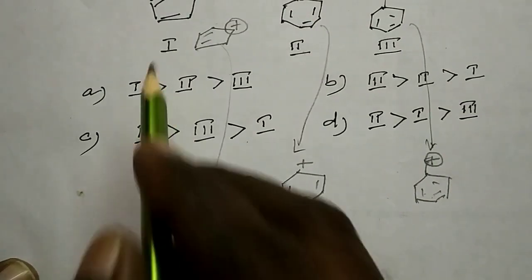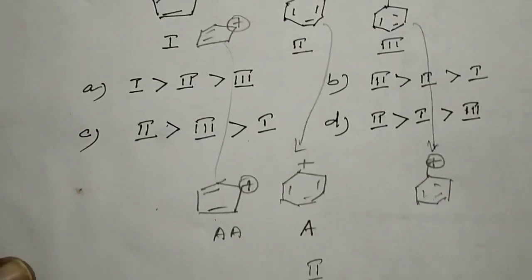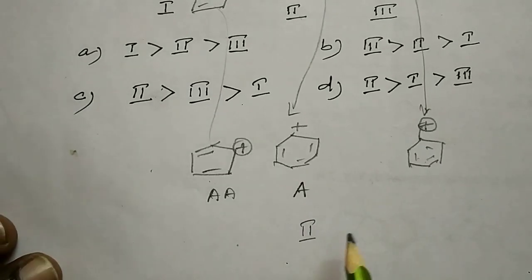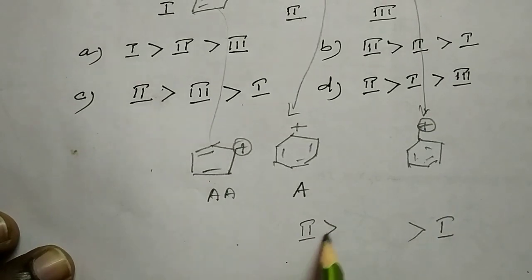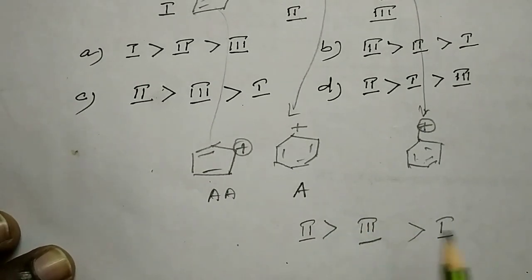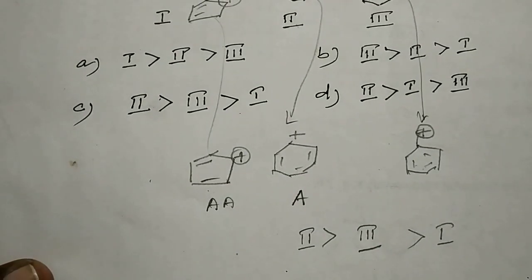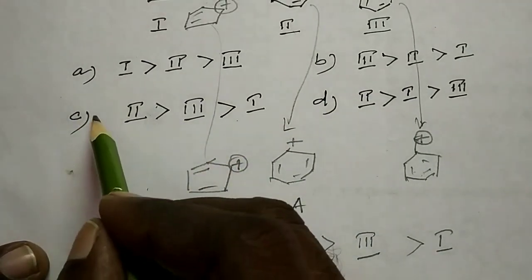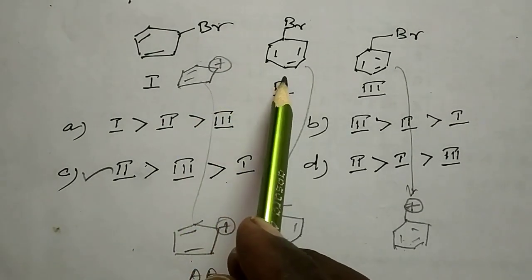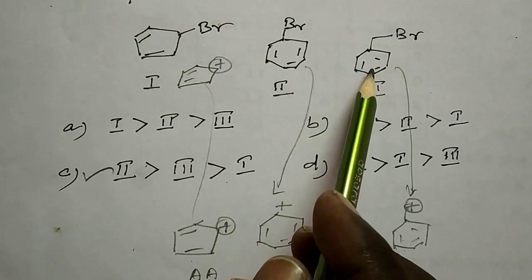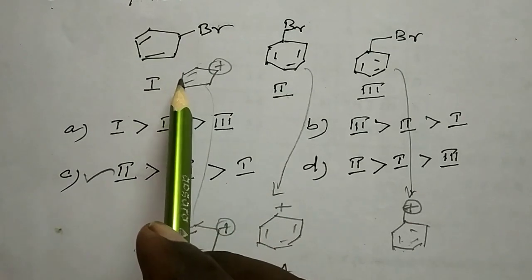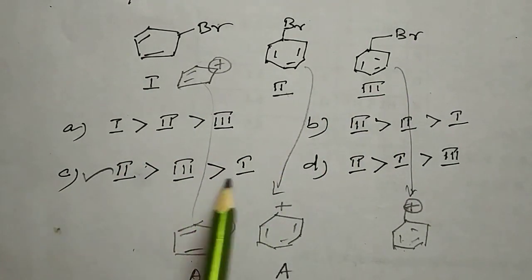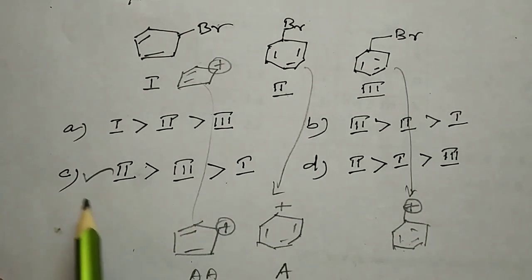So the stability order is: tropylium ion (compound 2) is the most stable, then the benzyl cation (compound 3), then the cyclopentadienyl cation (compound 1) as the least stable. Therefore the solvolysis rate order is 2 > 3 > 1. Option C is the answer.